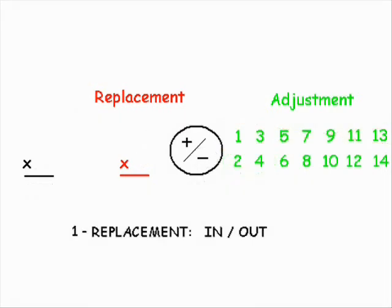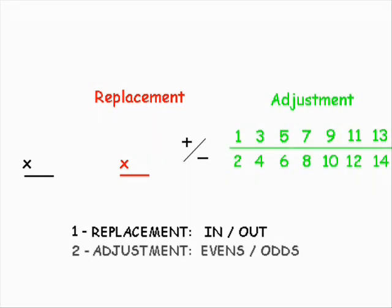Because in addition to knowing whether to add or subtract the adjustment, now I had to keep track of whether to adjust by evens or odds. If this kind of replacement multiplication was going to be helpful, I needed an easy way to tell the difference.